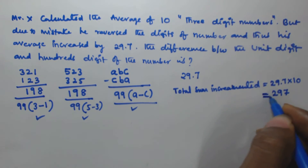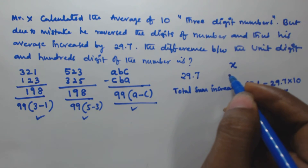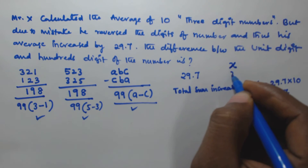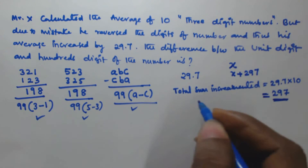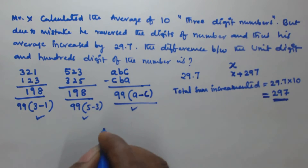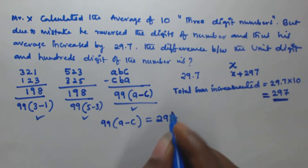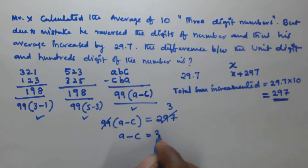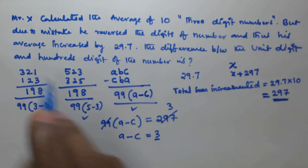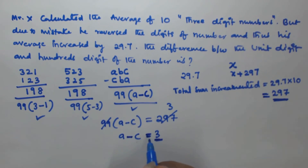This 297 is the actual sum increment caused by reversing the digits of the three-digit number. So 99 × (A − C) = 297, which gives A − C = 3. Therefore, the difference between the hundred digit and the unit digit of the number is equal to 3.